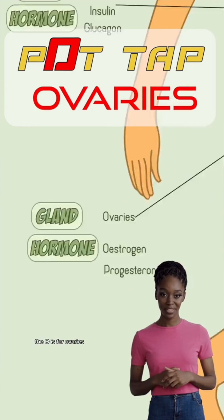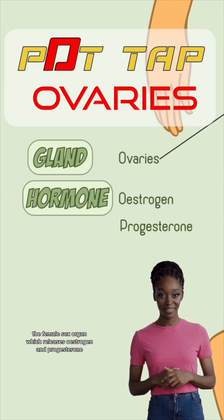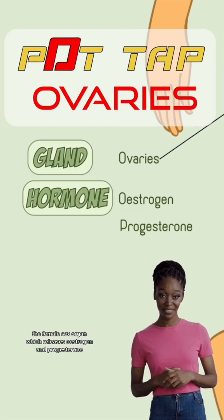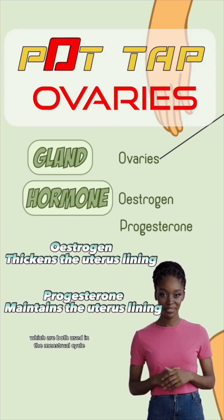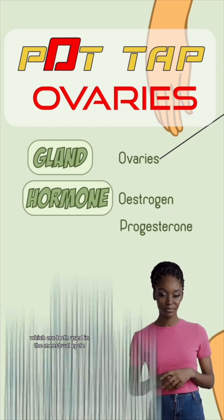The O is for ovaries, the female sex organ which releases estrogen and progesterone, which are both used in the menstrual cycle.